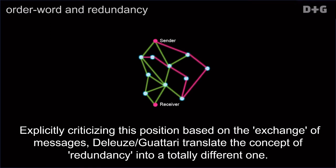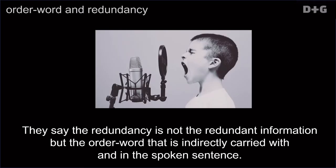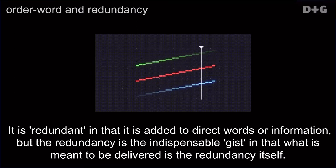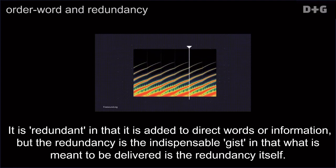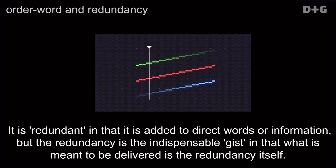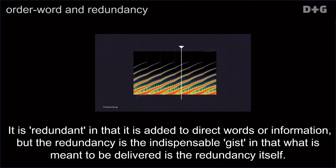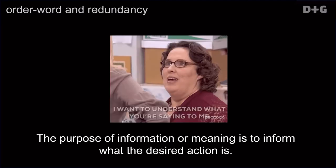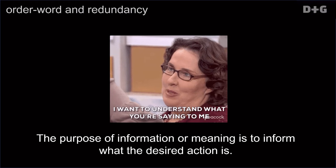Explicitly criticizing this position based on the exchange of messages, Deleuze-Guattari translates the concept of redundancy into a totally different one. They say the redundancy is not the redundant information but the order word that is indirectly carried with an unspoken sentence. It is redundant in that it is added to direct words or information. But the redundancy is the indispensable gist in that what is meant to be delivered is the redundancy itself. To speak to someone is to send an order word that is carried indirectly in the form of redundancy.